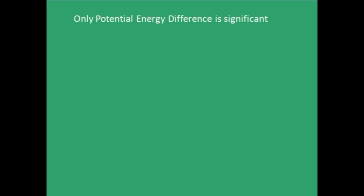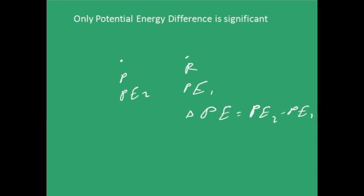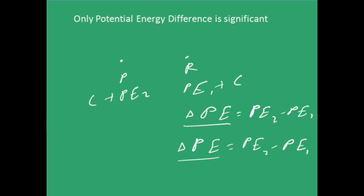It is the potential energy difference that is significant, not the actual potential energy at every point. Say if the potential energy at point R was Pe1 and at P was Pe2, the potential energy difference delta Pe would be Pe2 minus Pe1. You might as well say the potential energy at P was Pe2 plus C and at R was Pe1 plus C — you can add this constant everywhere and still the difference in potential energy would be the same, because the constant gets cancelled. Therefore, it is the potential energy difference that is significant; it really doesn't matter whatever constant you add.